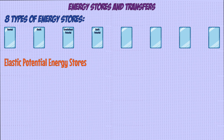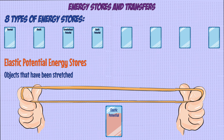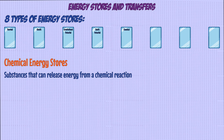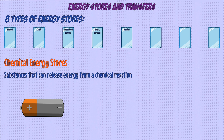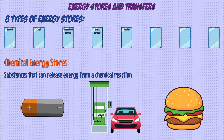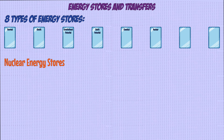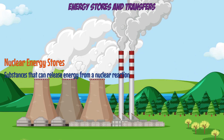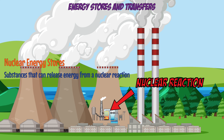Next is elastic potential energy, for any object that's stretched — for example, a stretched elastic band has energy in its elastic potential energy store. We also have chemical energy stores, which are any chemicals that can release energy from a chemical reaction, such as batteries in devices, petrol in cars, and the food that we eat. Nuclear energy stores are similar to chemical energy but involve energy released by nuclear reactions, found in nuclear power plants where atoms are split to release energy.